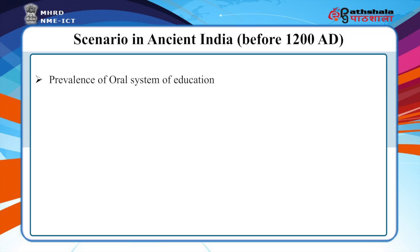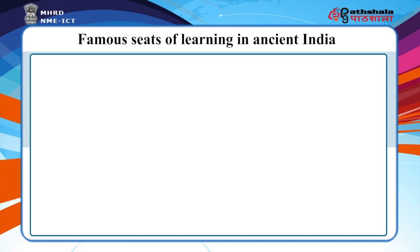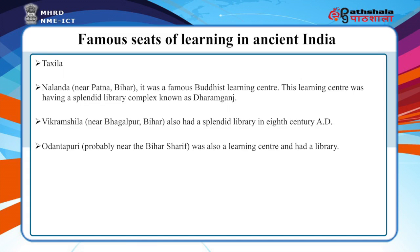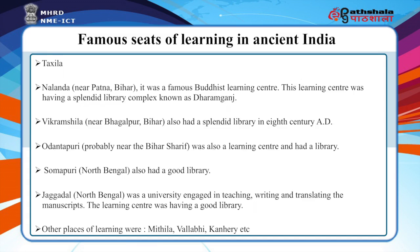In ancient India, the oral system of education prevailed in society and the Gurukul system was in vogue for imparting education. The following were the famous seats of learning in ancient India: Takshashila, Nalanda, Vikramshila, Odantpuri, Swampuri, Jagaddal, Mithila, Balbi, and Kaneri. All of these were universities engaged in teaching, writing, and translating materials, and each learning center had a good library.